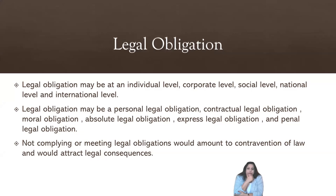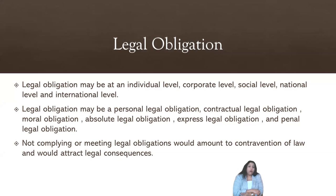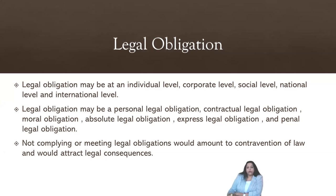A legal obligation may be at individual level, corporate level, social level, and national or even international level. Legal obligation may be personal, contractual, moral, absolute, express, and penal or criminal legal obligation. Not complying with legal obligations amounts to contravention of law and attracts legal consequences. For example, you must stop at the zebra crossing when somebody is crossing, or when there is a red traffic signal you are bound to stop — if you don't, it amounts to contravention of law.